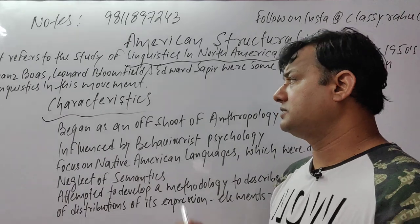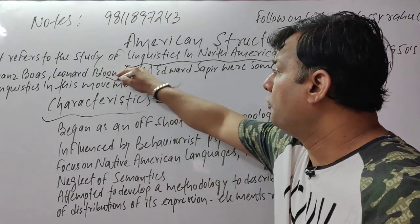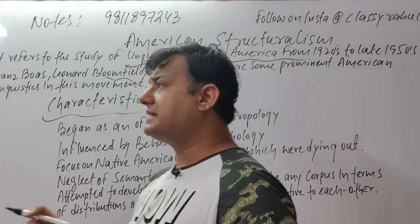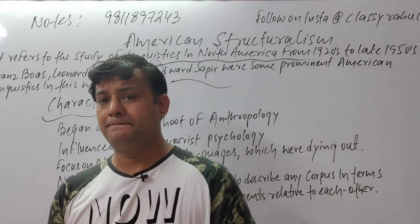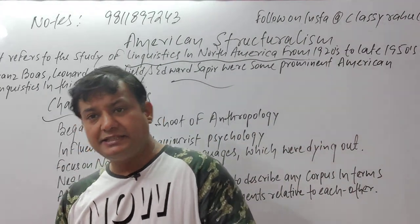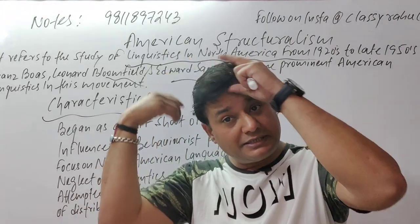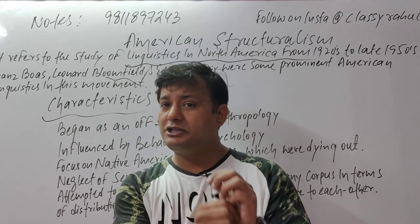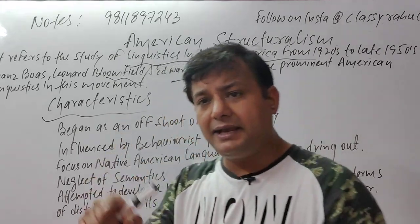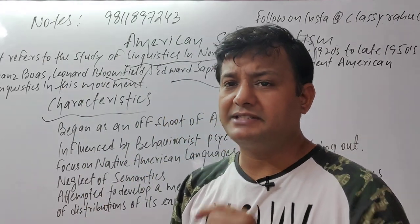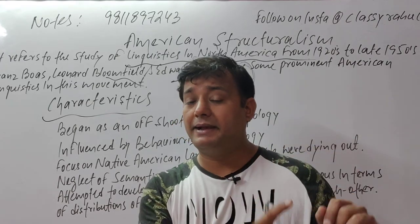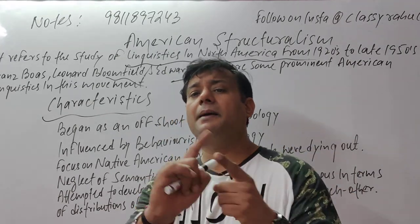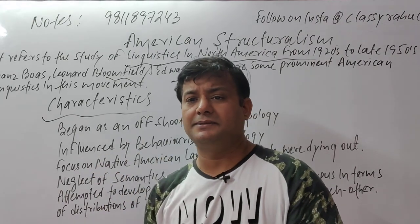The prominent linguists involved are Franz Boas, Leonard Bloomfield, and Edward Sapir. This era is also known as the Bloomfield era of linguistics, because he was the dominant pioneer of this theory. You need to know that this topic will also come in your GRE examination. So who was the prominent linguist in American Structuralism? Bloomfield.